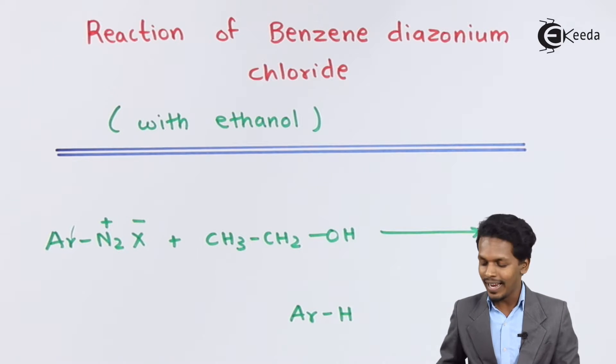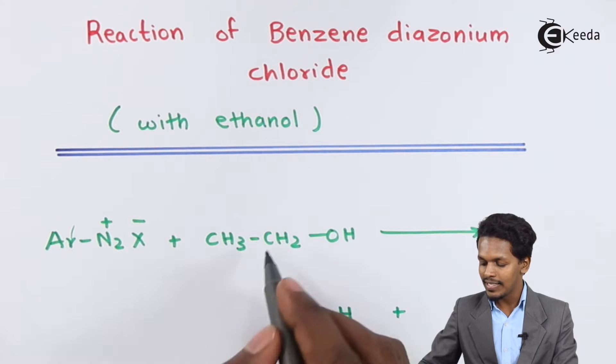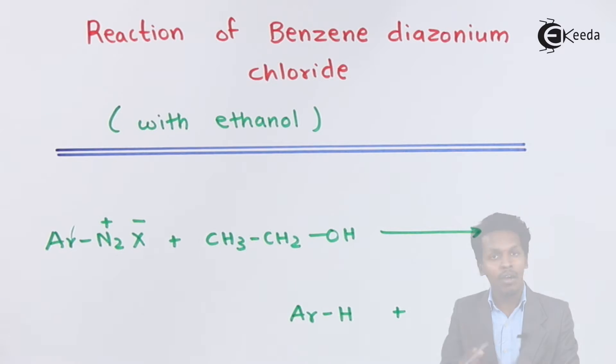The rest of the product undergoes oxidation and becomes CH3-CHO, an aldehyde. The byproducts are N2 and the X is removed in the form of HX. This is how the reaction proceeds.